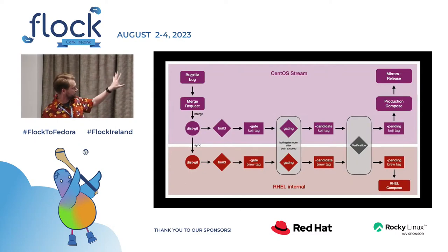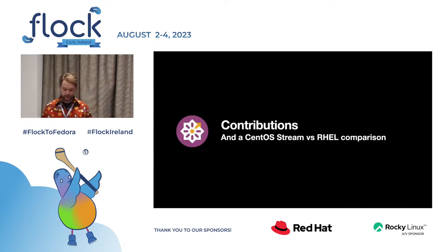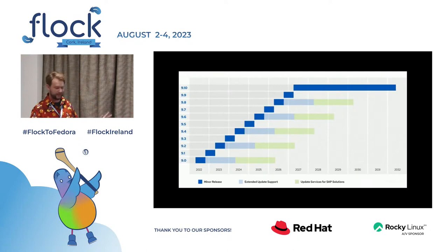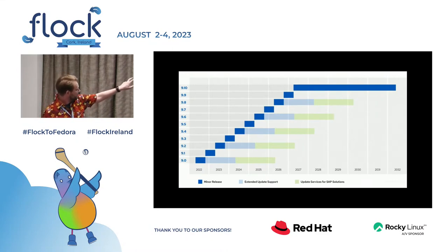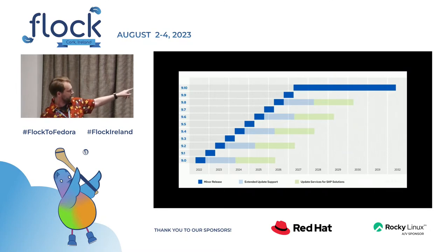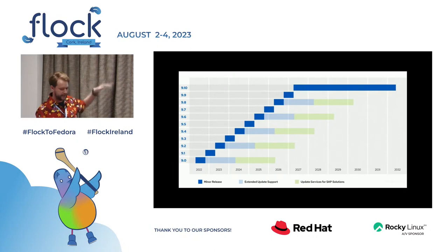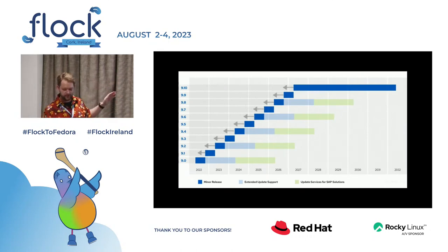To summarize the flow: bug → contribution → build → test → verification → compose → release. Now let's talk about contributions and how CentOS Stream relates to RHEL. Here's a RHEL lifecycle diagram — this is RHEL 9 from the product pages. Every minor release is roughly half a year, each supported in various stages: minor release, extended update support, and update services for SAP solutions with an even longer lifecycle. For CentOS Stream you don't need to worry about it too much — the whole thing gets developed in CentOS Stream, following along without the sense of distinct minor releases.